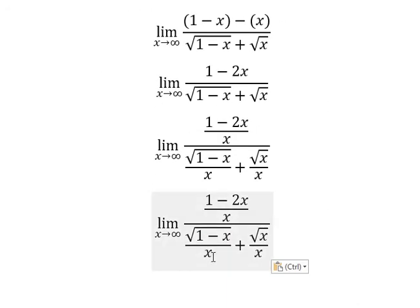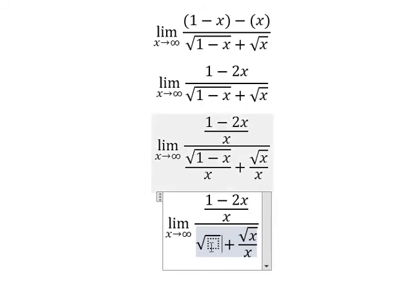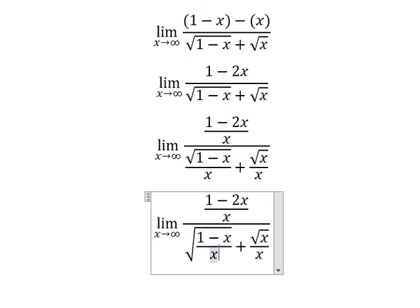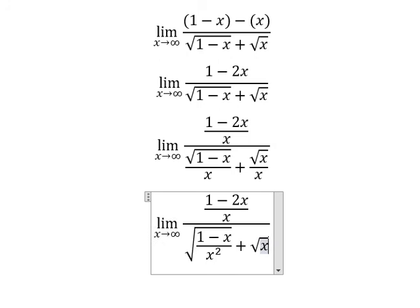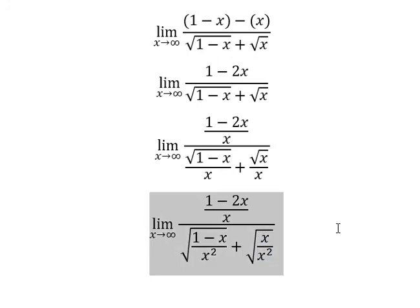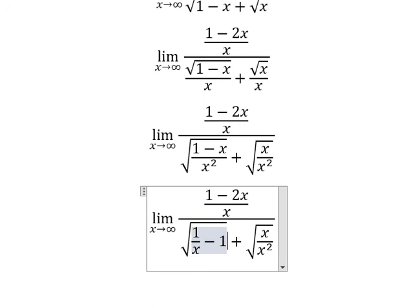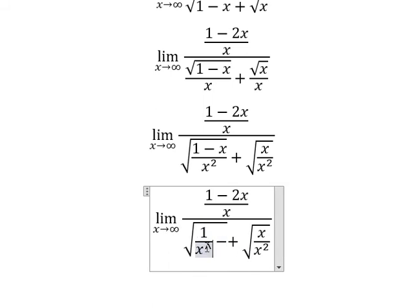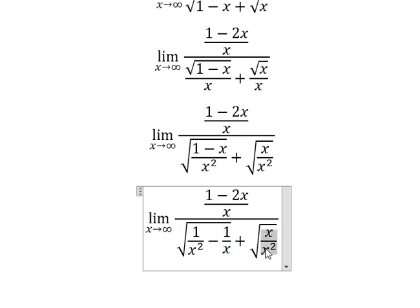Now let's go inside the square root and simplify — we get an expression like this. Similarly for the second term, we have one divided by s squared and s divided by s squared, and similarly for this term as well.